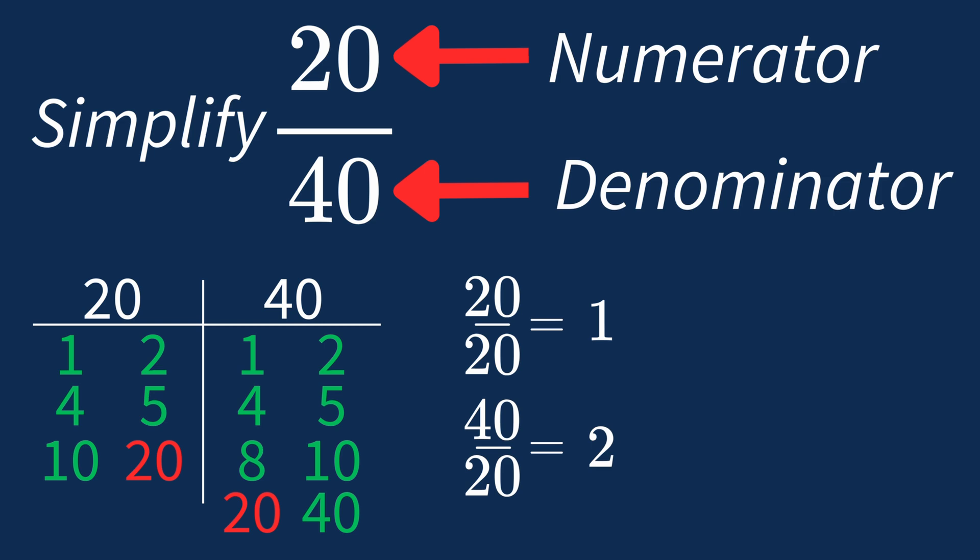So after dividing, the simplified fraction is 1 over 2. And we know that 1 over 2 is in its simplest form, because the only common factor between 1 and 2 is 1. And when 1 is the largest common factor, we know that our fraction has been simplified.